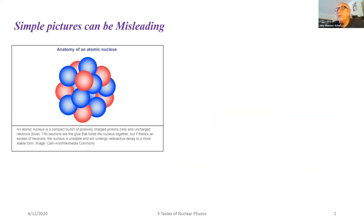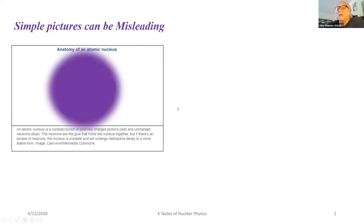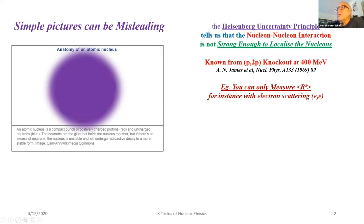I want to warn you that simple pictures can be misleading. You've seen a lot of these with red and blue balls tightly packed like on a three-dimensional billiard table. Those of us who know quantum mechanics know that the Heisenberg uncertainty principle tells you the nucleon-nucleon interaction is not strong enough to localize the neutron — it's actually a purple soup — and the wave functions are spread throughout the nucleus.